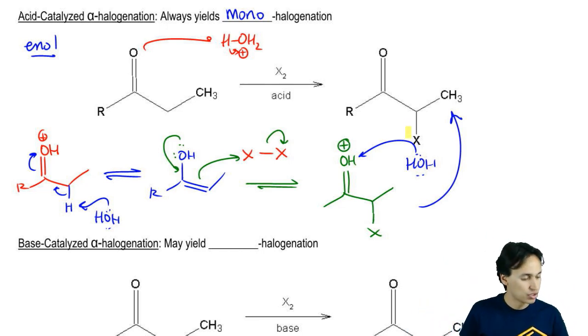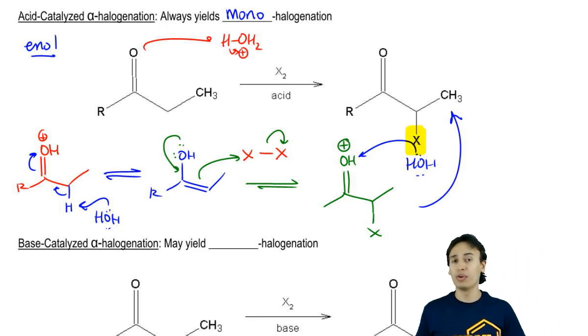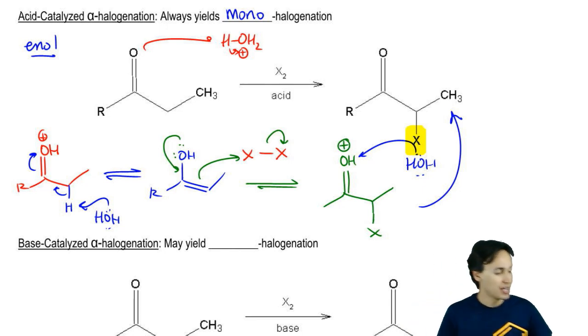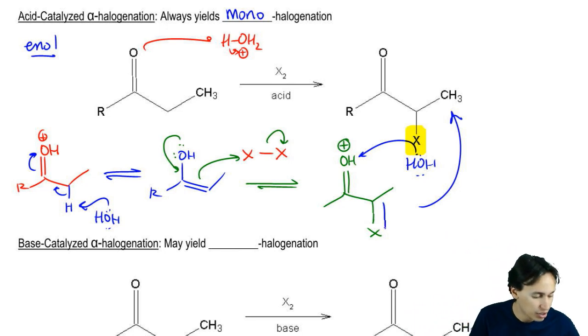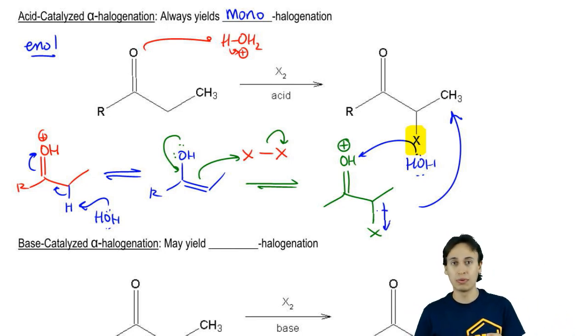Notice that we add an X to the alpha position but we only add one time. Now you might be wondering, Johnny, why would you only add once, why does it not add again? It turns out that having the X there to pull electrons away from the alpha carbon is going to make it less likely to make an enol next time because the enol is going to require a positive charge on those carbons. By pulling away extra electrons, you make it less likely to form an enol so it only reacts once. Cool so far?